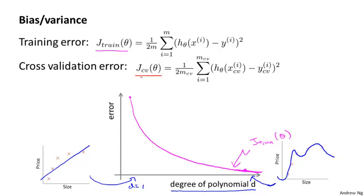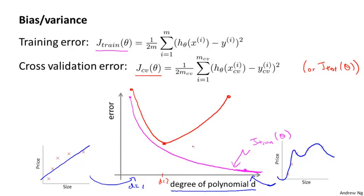Now let's look at the cross-validation error — or the test set error, which gives a pretty similar result. If d equals one, we're fitting a very simple function and underfitting the training set, so we'll have a very high cross-validation error. If we fit an intermediate degree polynomial, say d equals two, we get a much lower cross-validation error because we're finding a much better fit to the data. Conversely, if d is too high — say a value of four — we're again overfitting and end up with a high cross-validation error. So if you vary this smoothly and plot a curve, you get a U-shaped curve for Jcv of theta, and J test of theta gives something very similar.